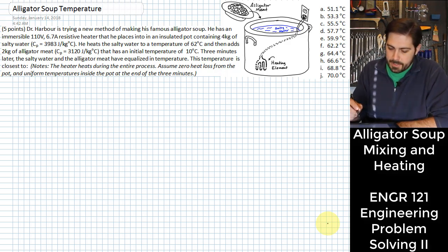For this problem we are basically putting alligator meat into salt water and as we do that the salt water is probably going to impart some heat into the alligator meat because the alligator meat starts at lower temperature than the water does. So that's happening and at the same time we have this electric heat going on.